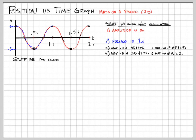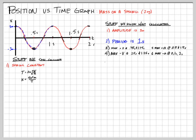Now if we do some calculations we can get even more. First, the spring constant: we know T = 2π√(m/k), and solving for k gives k = 4π²m/T². Plugging in m = 2 kg and T = 1 s: k = 4 × (3.14)² × 2 / 1² ≈ 79 N/m. Just from that graph and knowing the mass, we can calculate the spring constant.